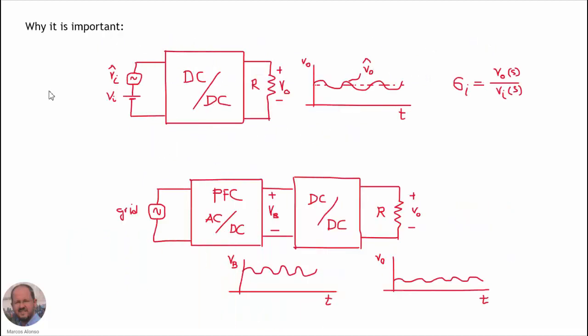In the last video we already saw why it is important to know the audio susceptibility of a DC-DC converter. The audio susceptibility transfer function can provide us with information about how the output is going to evolve when we have a perturbation at the input. This perturbation can be a ripple superposed to the input voltage, or it could be a transient step-up or step-down at the input. This is very common in power factor correction applications, in which at the output of the power factor corrector we have a ripple, and this ripple is going to be transferred into the output. We can calculate the output ripple using the audio susceptibility of the DC-DC converter at the corresponding frequency.